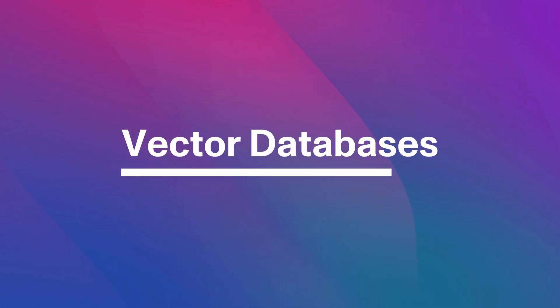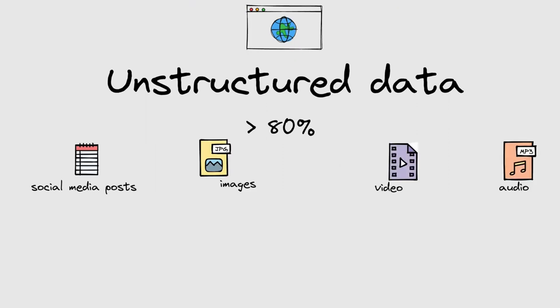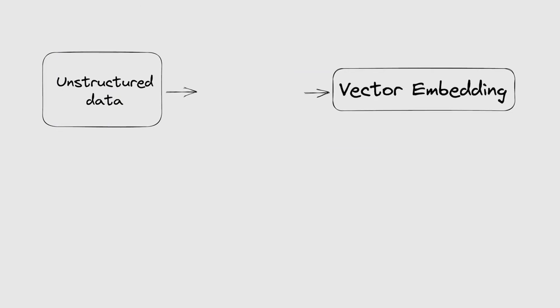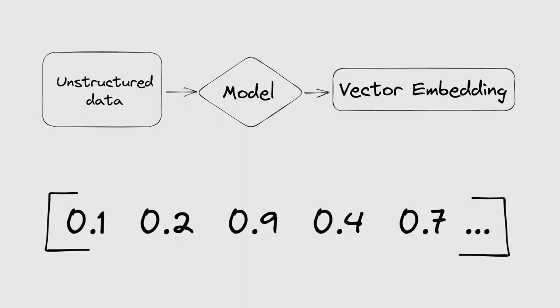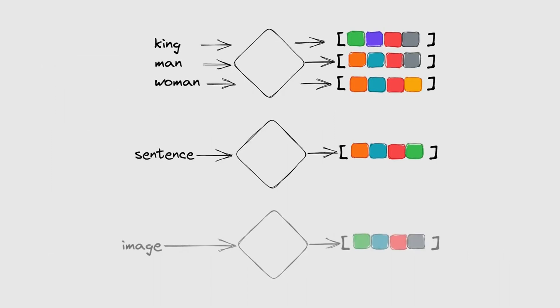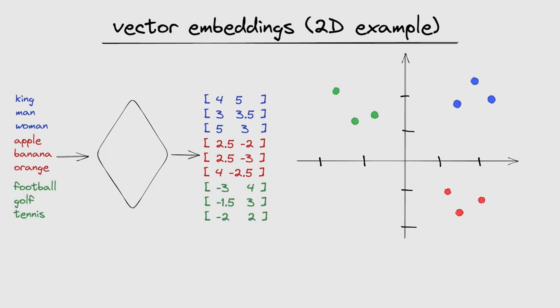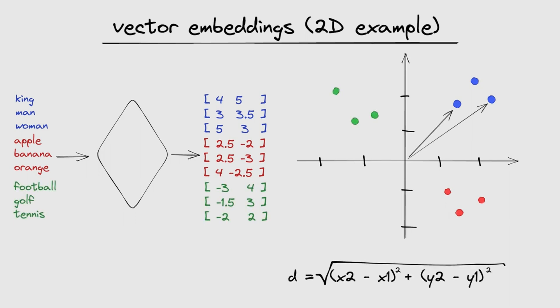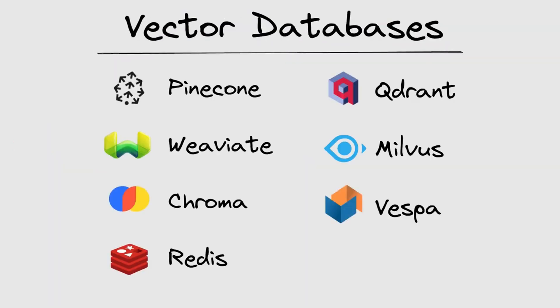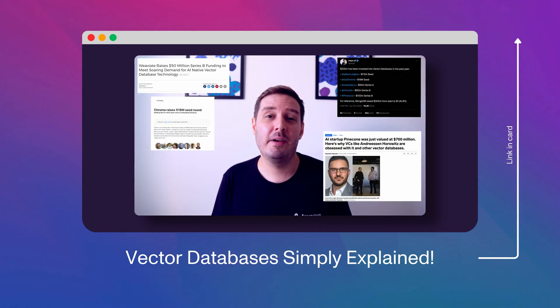Vector databases are databases specifically designed to store and retrieve vector representations of data. Vectors are numerical representations of words, phrases, or documents that capture semantic relationships and contextual information. These databases enable efficient storage and retrieval of vector embeddings, helping in tasks like similarity search, recommendation systems, and information retrieval, especially for large language models. There are many vector databases out there, some of which are Pinecone, Weaviate, Chroma, Redis, and more. Watch Patrick's video on vector databases to understand how they work and why they are useful.